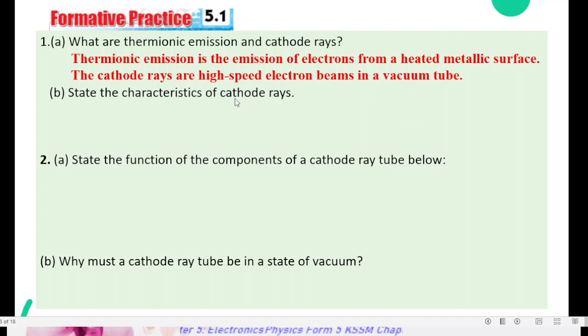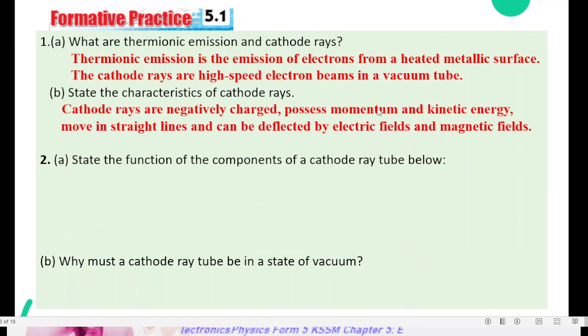Number 2A, state characteristic of cathode rays. Cathode rays are negatively charged, possess momentum and kinetic energy, move in a straight line and can be deflected by electric field and magnetic fields.